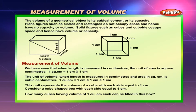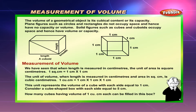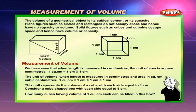The volume of a geometrical object is its cubical content or its capacity. Plane figures such as circles and rectangles do not occupy space and hence have no capacity or volume. Solid figures such as cubes and cuboids occupy space and hence have volume or capacity.